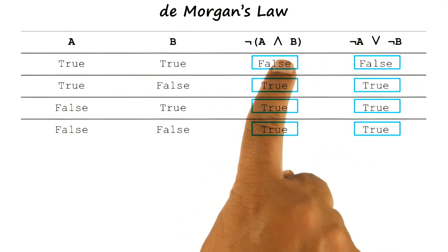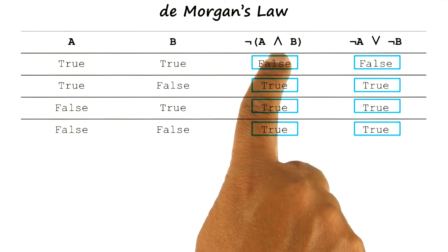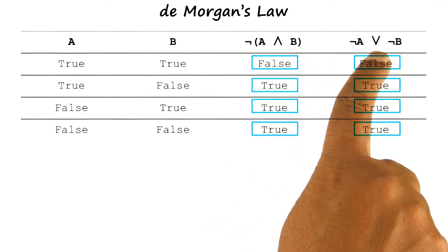The same would be true if we had a disjunction here. When we distribute the negation, it would become a conjunction.